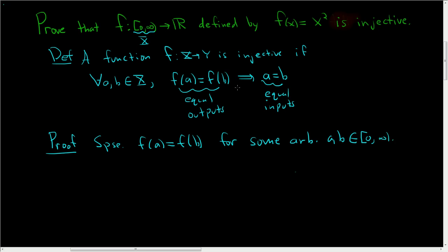Now we just have to show that a is equal to b. So we started by assuming that f(a) is equal to f(b) and we have to prove that a is equal to b. Well, f(x) is x squared, so f(a) is a squared, and this is equal to f(b), which is just b squared.